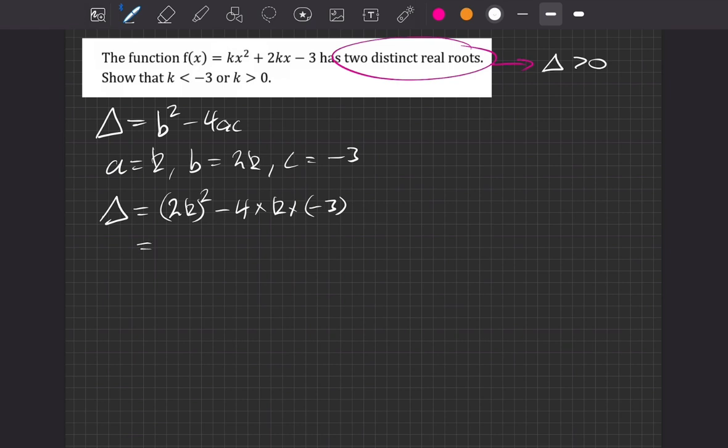So we can expand some bits of this out. We're going to have then, this is 4k squared. The minus from the minus 4 and the minus from the minus 3 combine together to make a plus. And the 4 and the 3 themselves make a 12. So what we have is plus 12k.